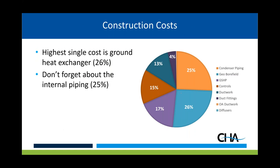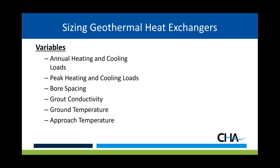Looking at the cost breakdown, you can see why people focus on the geobore field so much — it's the single most expensive component, about 26% of the HVAC system cost, typically 20–25%. But don't forget about all the internal piping — as Steve Cavanaugh has written about doing affordable ground source heat pumps, the piping is expensive. We're going to focus on the ground heat exchanger as it tends to be the largest single cost. When sizing the ground heat exchanger, the major variables are the balance of annual heating and cooling loads, peak heating and cooling loads, bore spacing, grout conductivity, steady-state ground temperature, and approach temperatures.